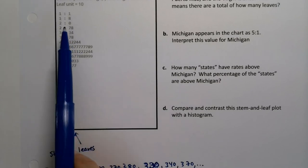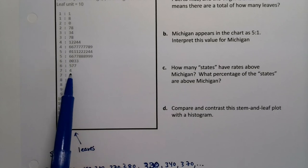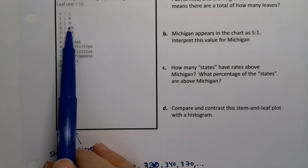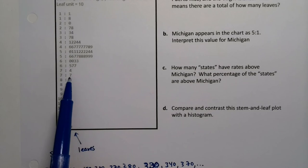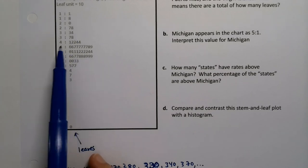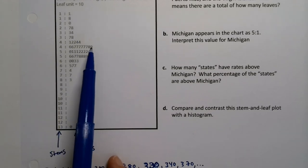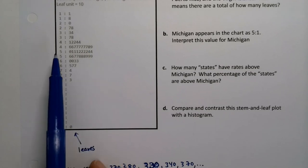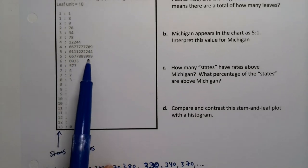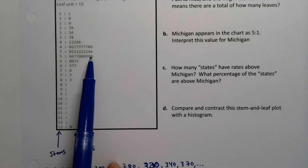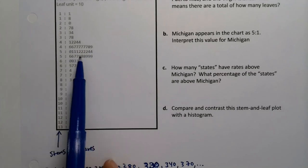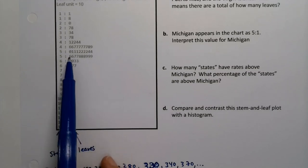It's like a histogram in that these digits all take up the same amount of space, and so do these next digits. You can tell that this grouping in the 40s and this grouping in the 50s, actually it's 400s and 500s, those are the longest groupings. So most states and these territories are in that region right there.